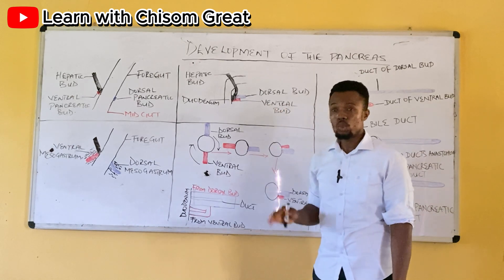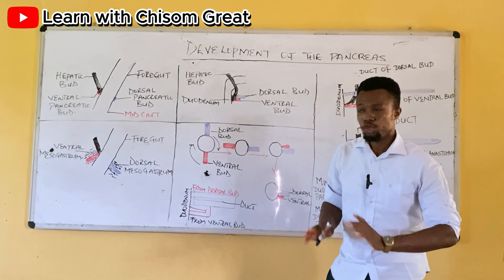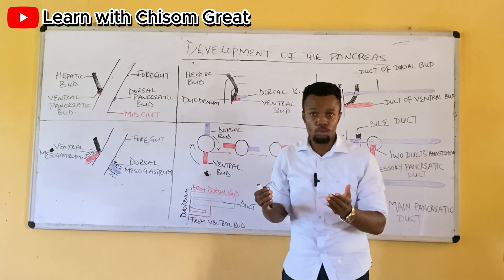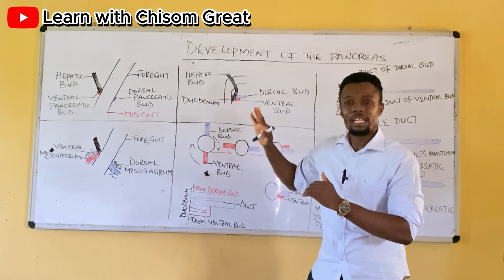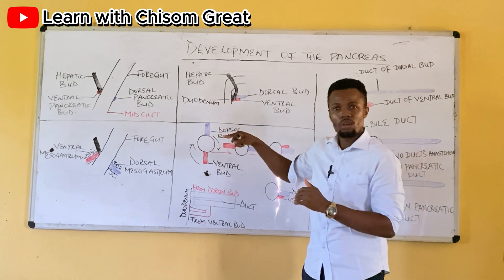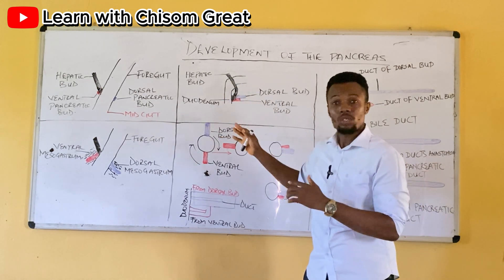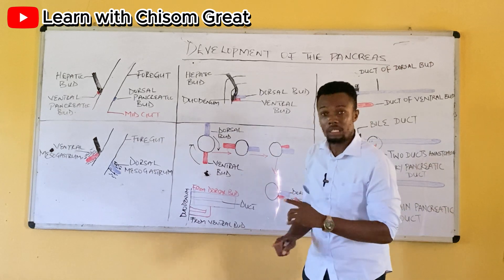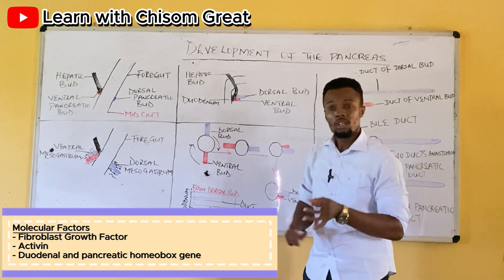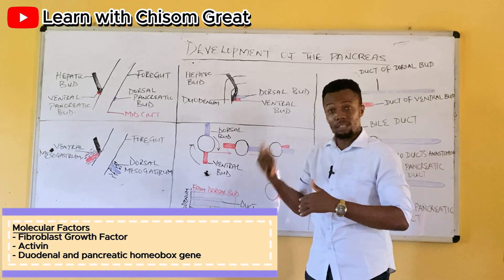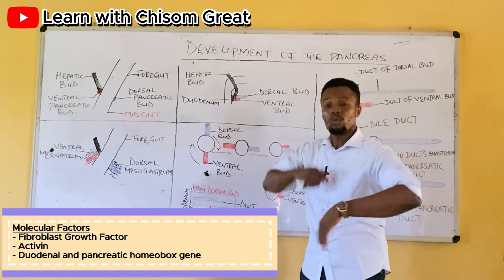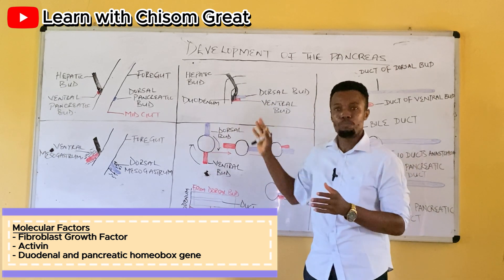Glucagon-secreting cells and somatostatin-secreting cells also develop from the parenchyma of the pancreatic tissue. At the molecular level, the factors responsible for this development are fibroblast growth factor and activin. These two factors activate the duodenal and pancreatic homeobox genes to begin pancreatic development.